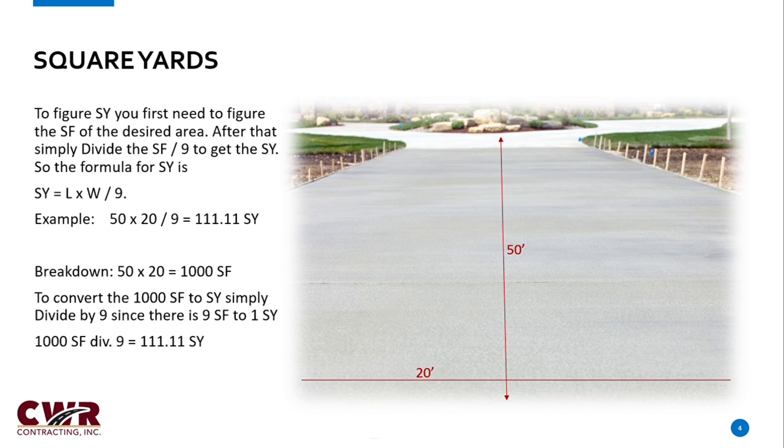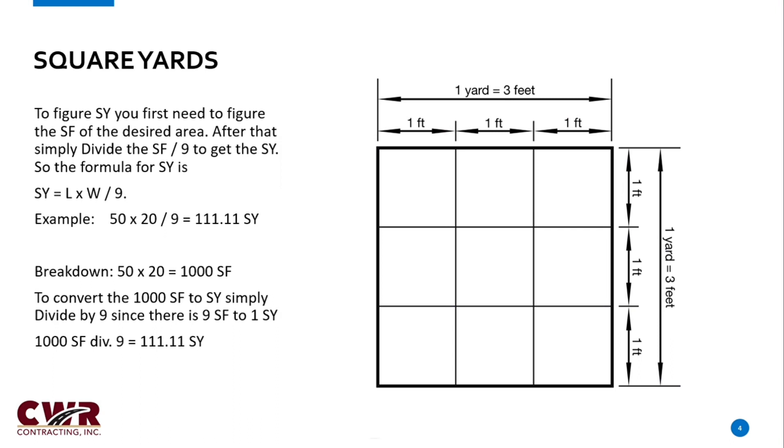let's say we've got a 50 foot slab by 20 foot. The first thing you do is you want to find the square footage. So 50 times 20 is 1,000 square feet, right? So in order to convert that, we just take the 1,000 square feet that we have now and divide that by 9.